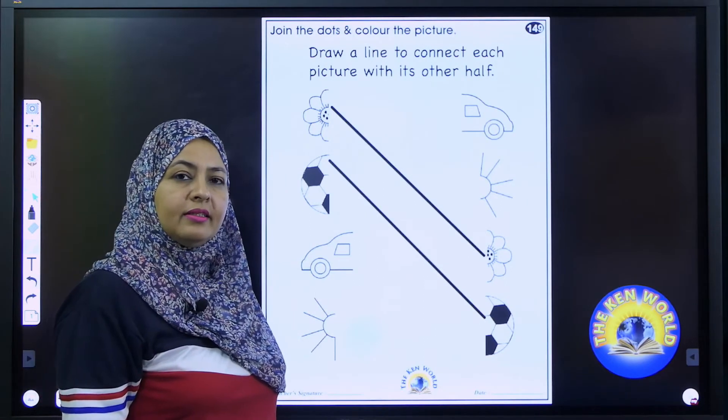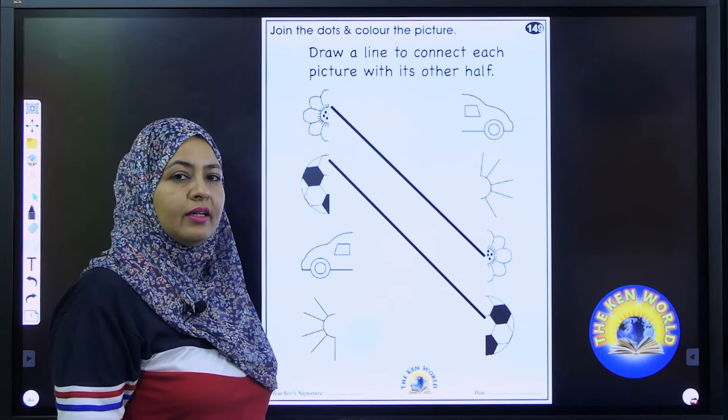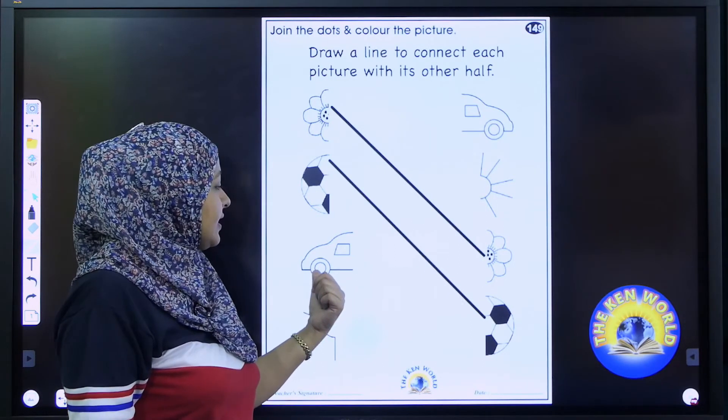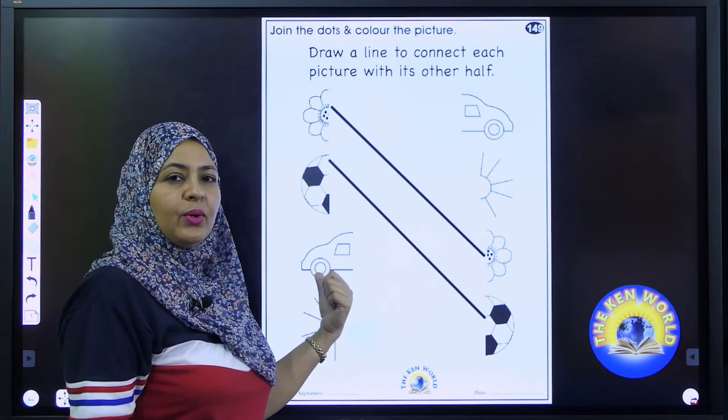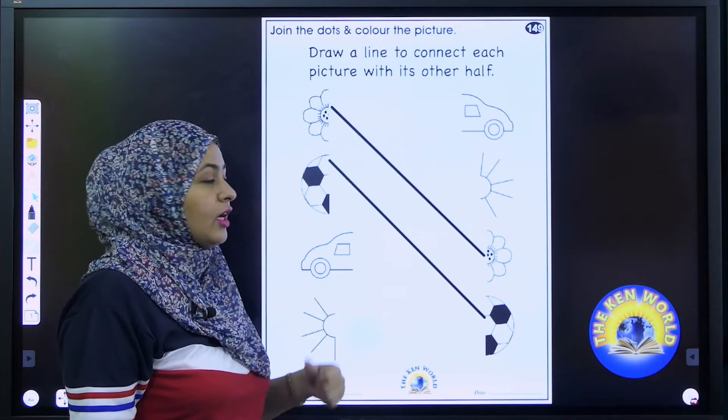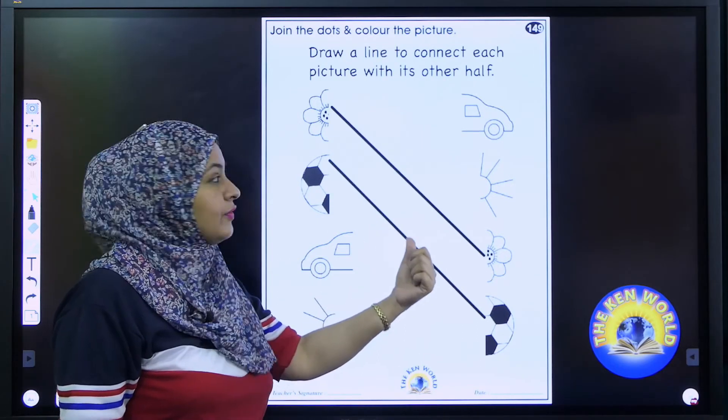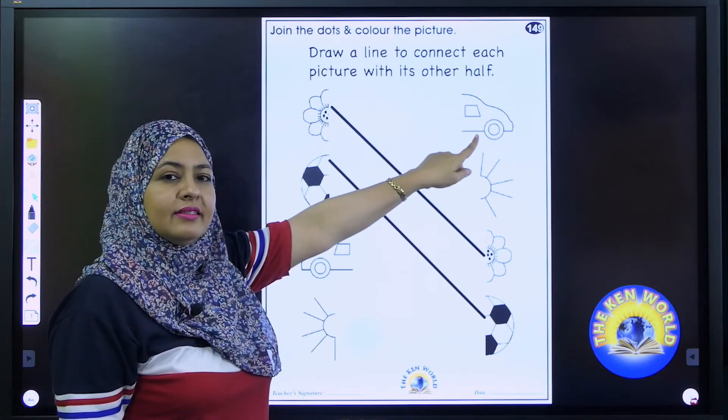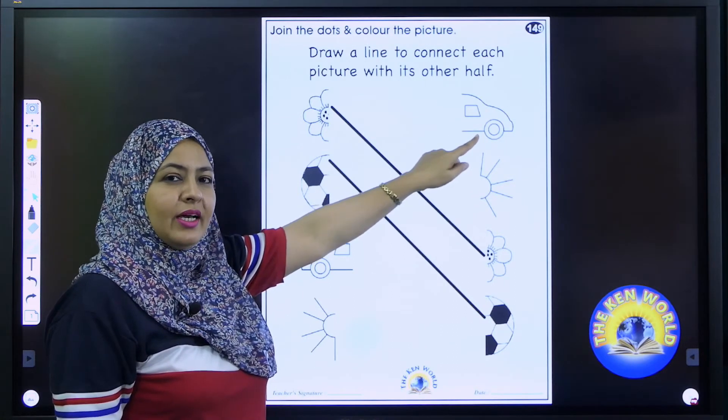Have you done? Good. Now tell me which picture is this? Good. It is a picture of a car. And search out its other half. Is this one? No. Yes. So connect it.